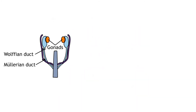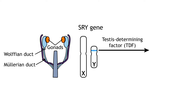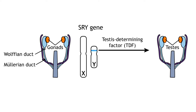The undifferentiated gonadal system is the same for both sexes. On the Y chromosome is a gene called the sex-determining region of the Y chromosome, or SRY gene. The SRY gene is required for masculinization of the embryonic gonads. The SRY gene encodes for a protein called the testes-determining factor, or TDF, which causes the embryonic gonads to differentiate into the testes.